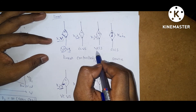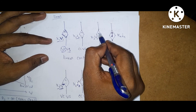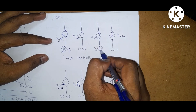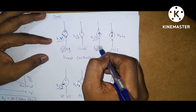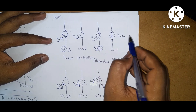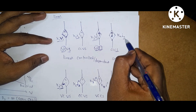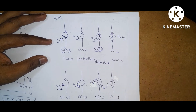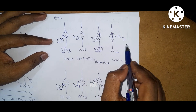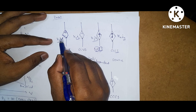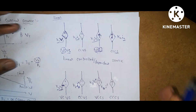Similarly, voltage control current source has the source as a current source with control variable as voltage. Current control current source has the source as a current source with control variable as current. All of these, where the control variable varies linearly, are linear dependent sources or linear controlled sources.